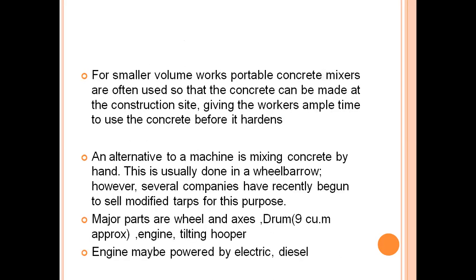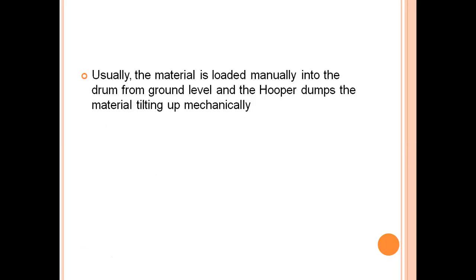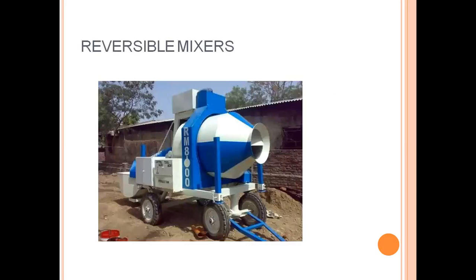For smaller volume works, portable concrete mixers are often used so that concrete can be made at the construction site, giving workers ample time to use it before it hardens. An alternative is mixing concrete by hand in a wheelbarrow. Major parts include a wheel and axle, a drum of approximately 9 cubic meters, a tilting hopper, and an engine which may be powered by electric or diesel. Material is loaded manually into the drum and the hopper dumps it by tilting up mechanically.